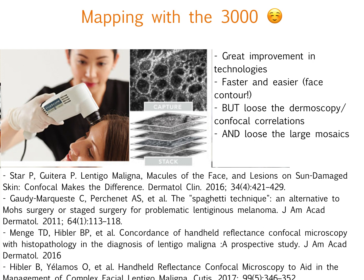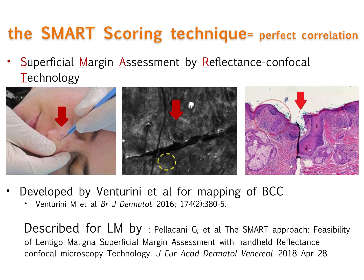These findings have been described in numerous articles. The smart scoring technique is a very smart way of achieving a perfect correlation between confocal and pathology when you're using the 3000 head and you're not totally sure where you are imaging. The idea is to use a blade to cut very superficially into the skin — you will see the little cut on your image — and progress slowly to wherever you think is a good margin. When you definitively cut your margin, the pathologist will find this little cut and can confirm that what you decided was the margin looks the same on pathology. This has been described by Pelikani et al. recently.